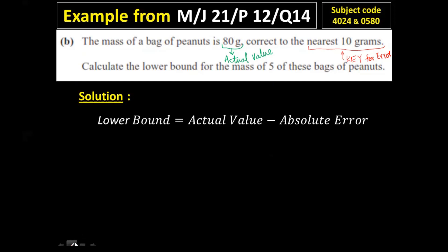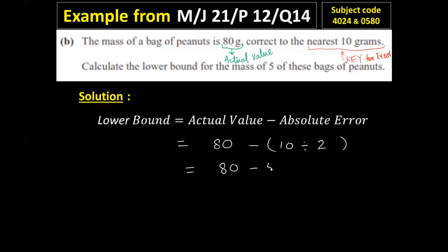The actual value is 80 grams. The absolute error is half of the 10 grams, because the key is nearest 10 grams. So I write: actual value is 80 grams minus absolute error. The key for absolute error is 10 grams, so 10 divided by 2 is 5. So 80 minus 5 is 75 grams. The lower bound of one bag is 75 grams.